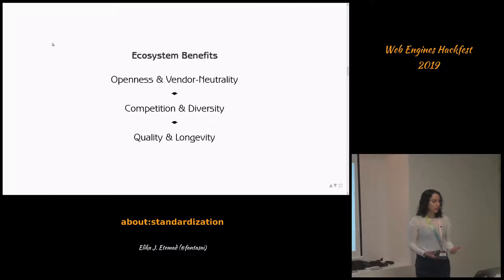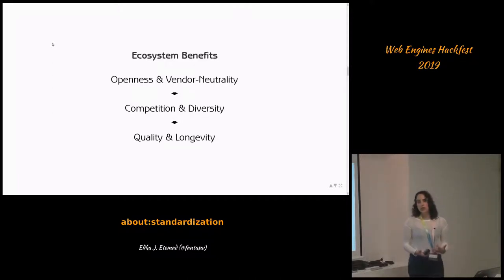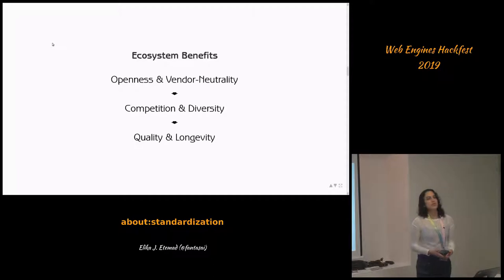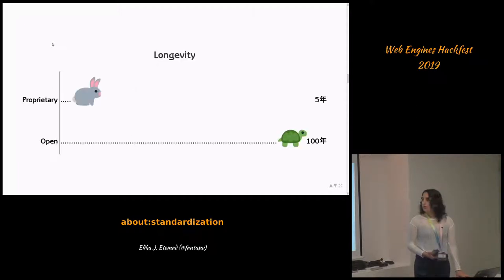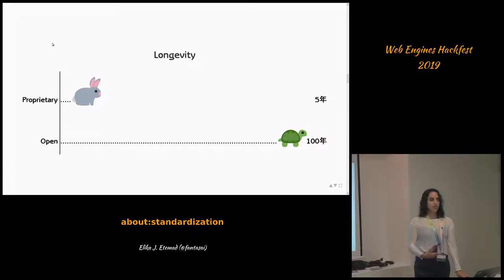Open standards also give better longevity. In an open standards-based software ecosystem, if one company goes under, other companies are also participating and the entire ecosystem can continue to exist and flourish. I'm not sure if the web will live to be a hundred years old, but it tends to be more long-lived with this kind of open ecosystem and collaboration.